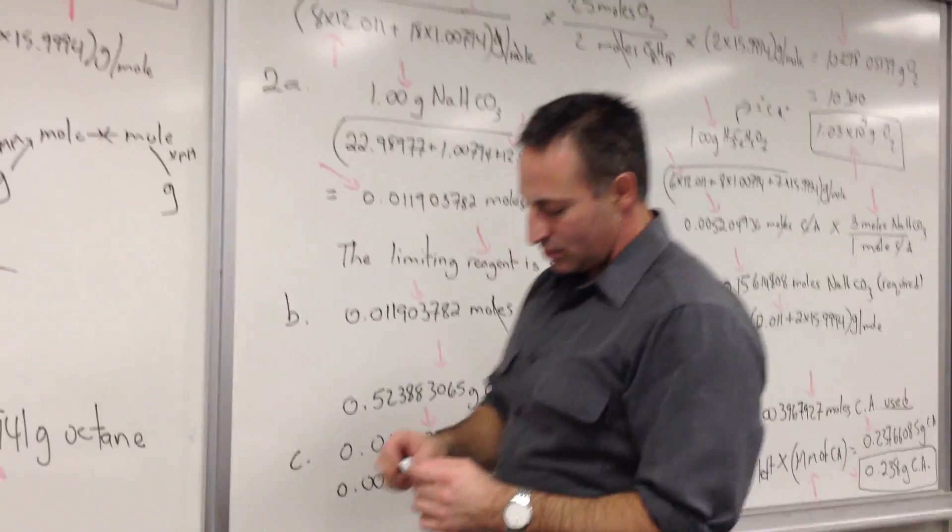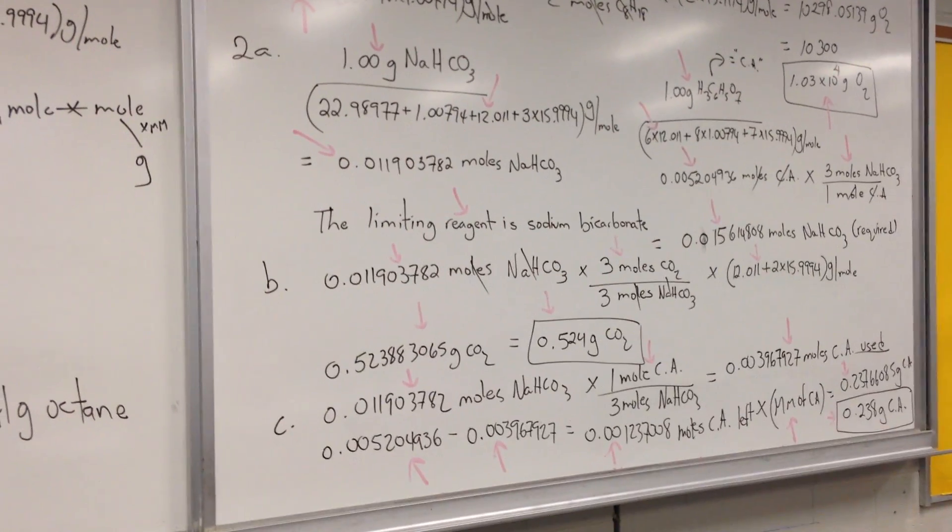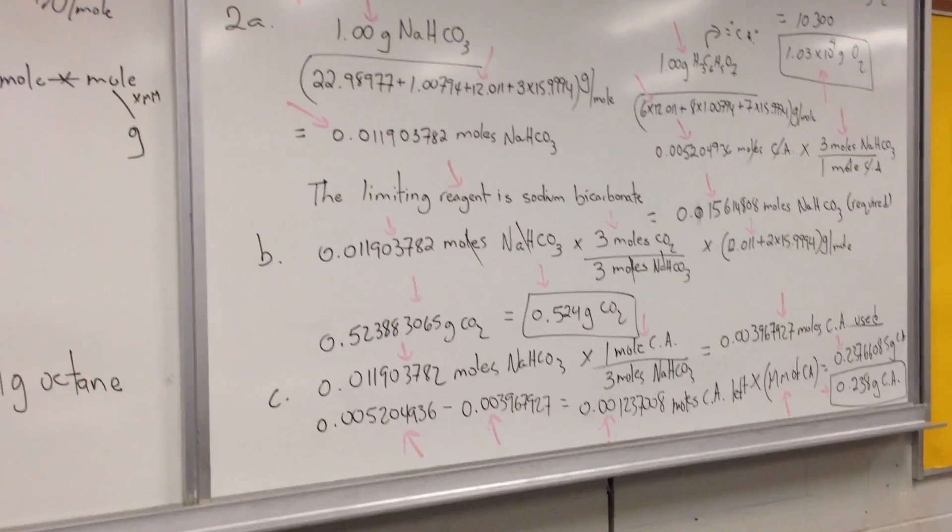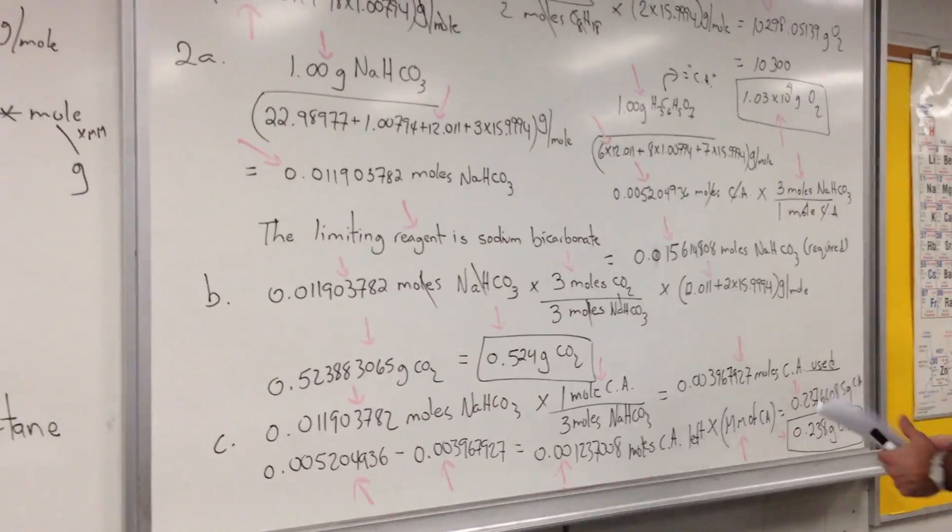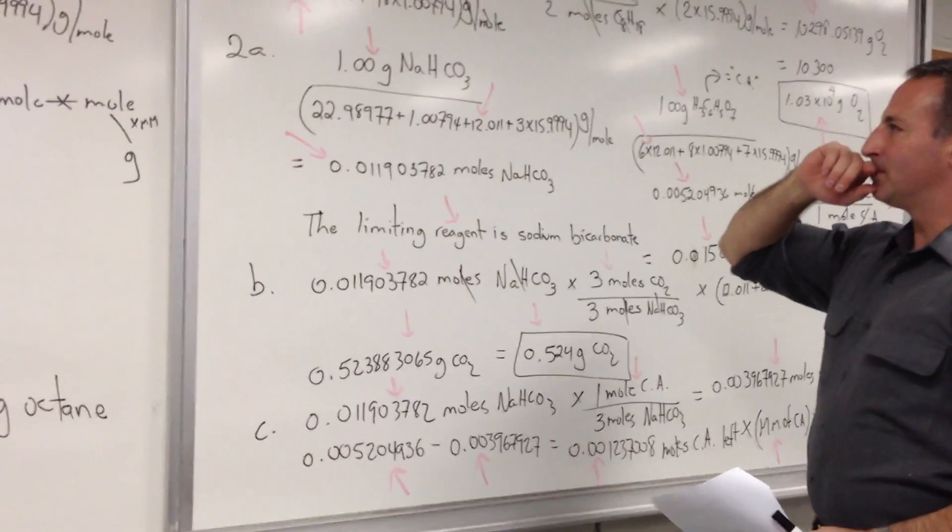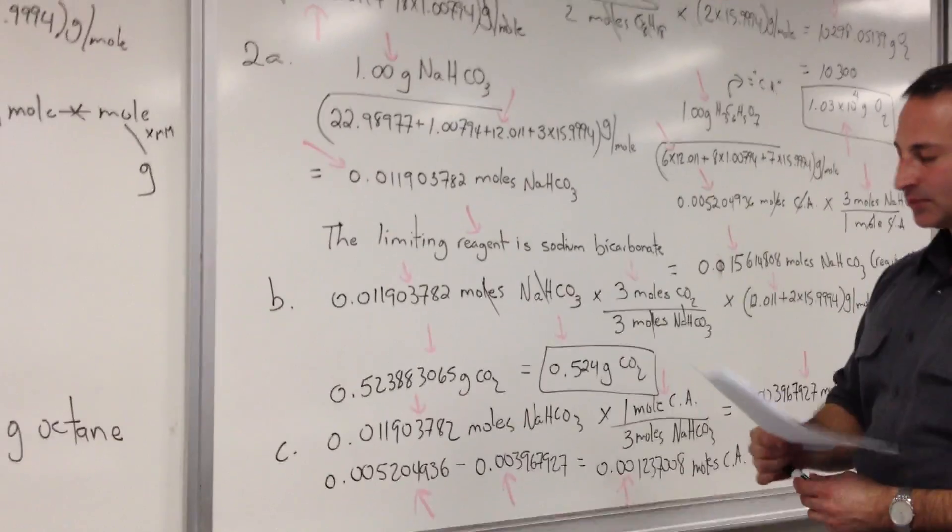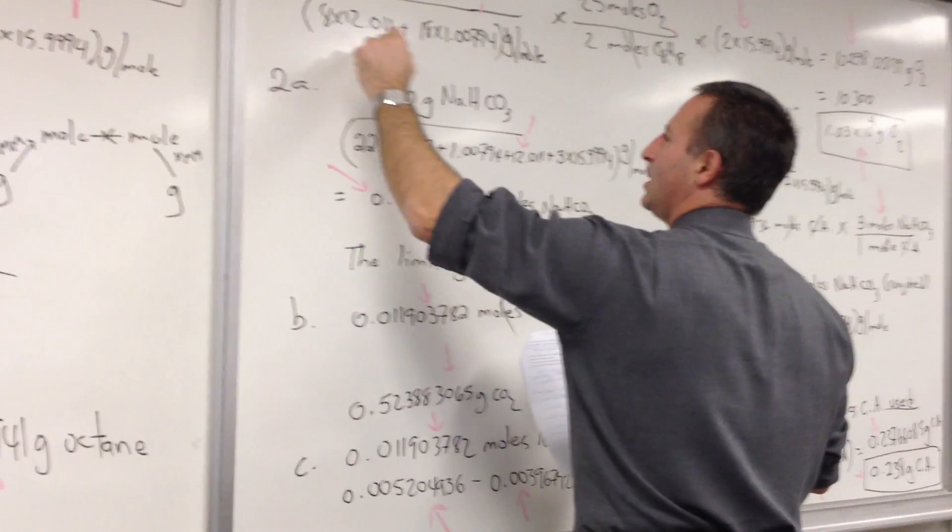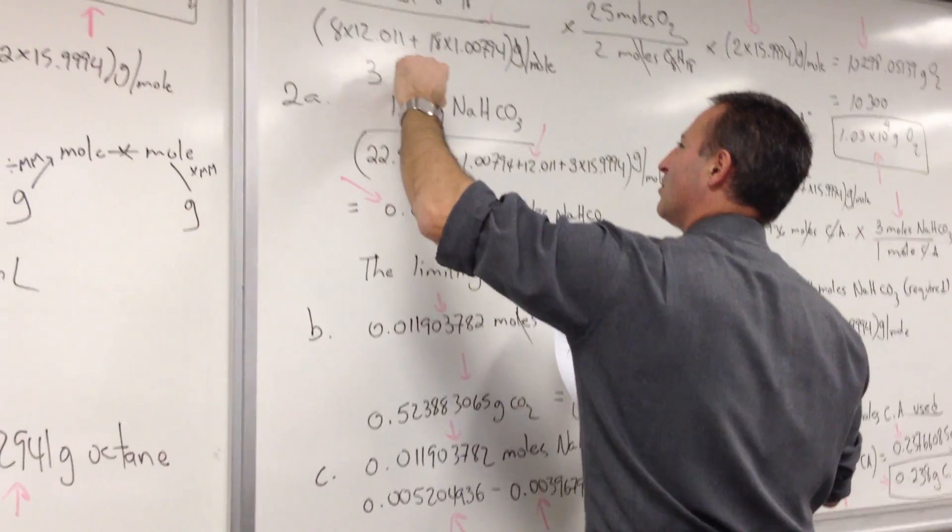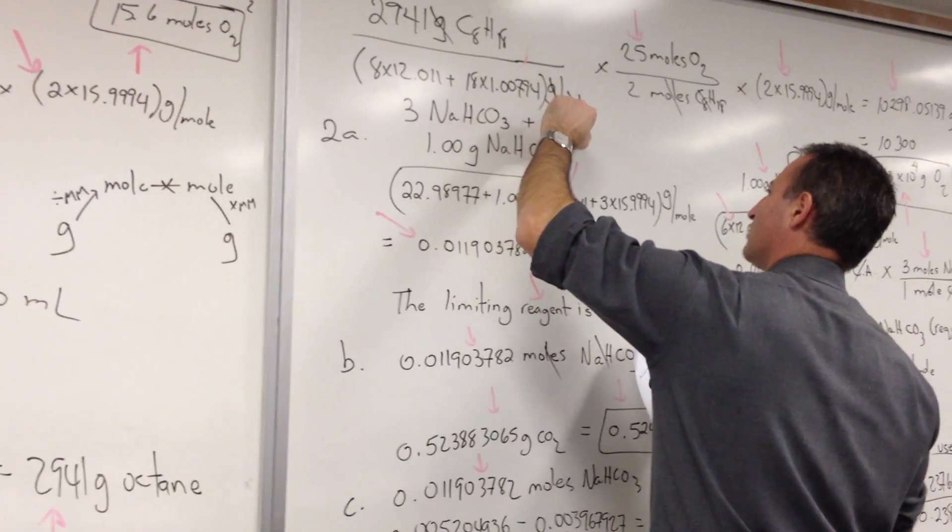Question number two is the limiting reagent question. One gram each of sodium hydrogen carbonate, also known as sodium bicarbonate, is mixed with one gram of citric acid. These two react, but we have to find out which one is going to be used up first.